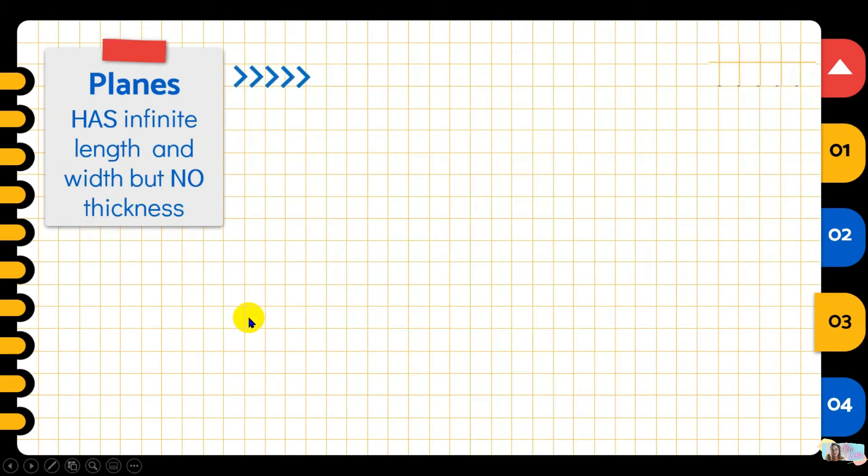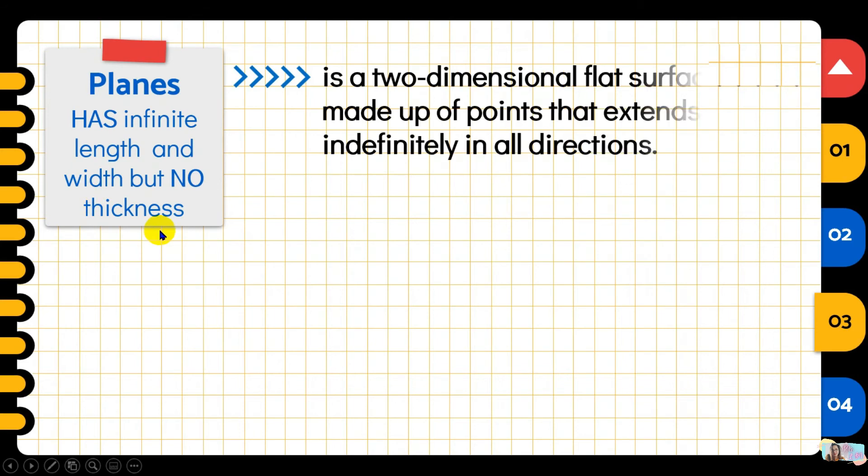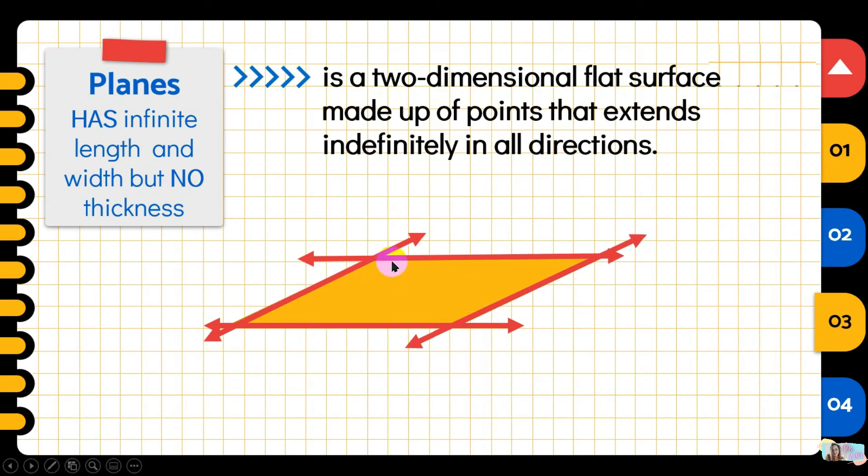Let's proceed to our third undefined term, and that is the planes. If a line is made up of many points, this plane is made up of many lines. Planes has infinite length and width but no thickness. So it is a two-dimensional flat surface. That's clear. Two-dimensional flat surface. Which are those two dimensions? Length and width only. And it is made up of points that extends indefinitely in all directions. Since lines are made up of points, so this definitely has many points. Usually, our representation of a plane is a parallelogram. And we have points inside our plane so we can name our plane.